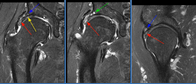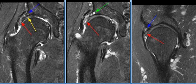The acetabulum is mildly dysplastic. The anterolateral labrum is hypertrophied and degenerated with a longitudinal tear. There is spurring of the acetabular rim laterally with subchondral cystic change.